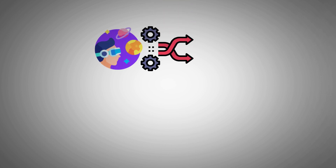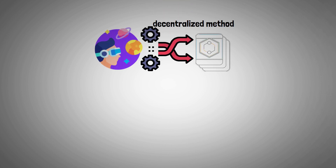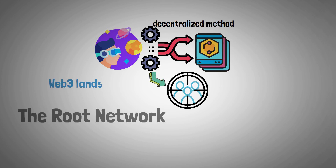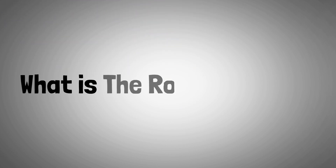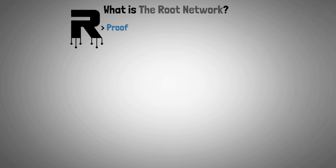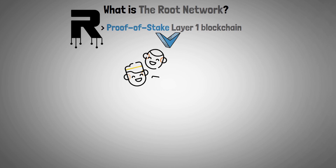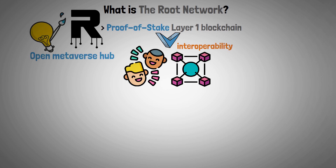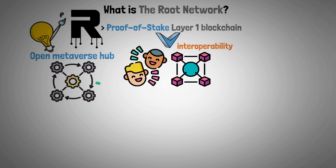Transforming the Open Metaverse through a decentralized method of defining digital assets and an approach that is focused on users, the Root Network stands out in the Web3 landscape. The Root Network is a Proof-of-Stake Layer 1 blockchain focused on providing the best user experience and facilitating digital asset interoperability. It is designed as an Open Metaverse Hub, where anything is interconnected with everything.